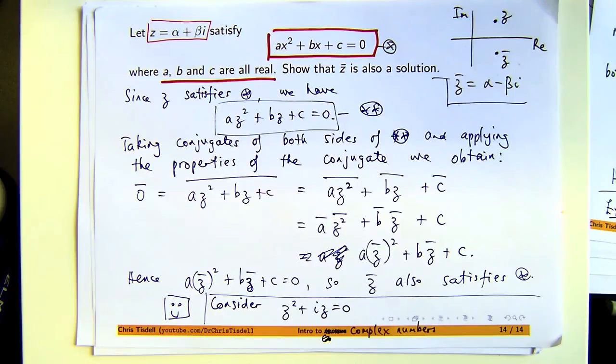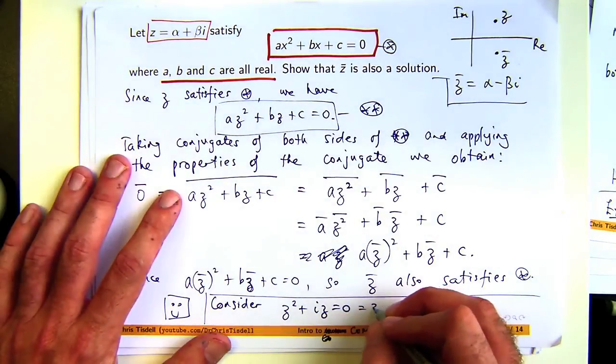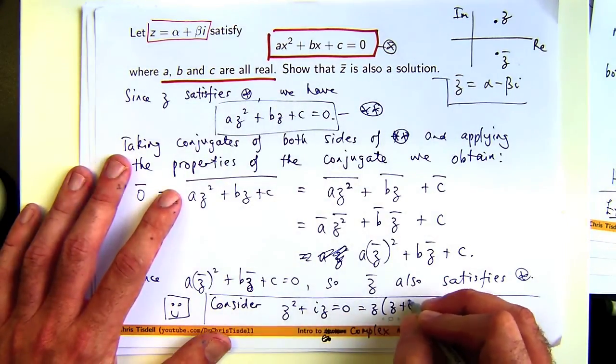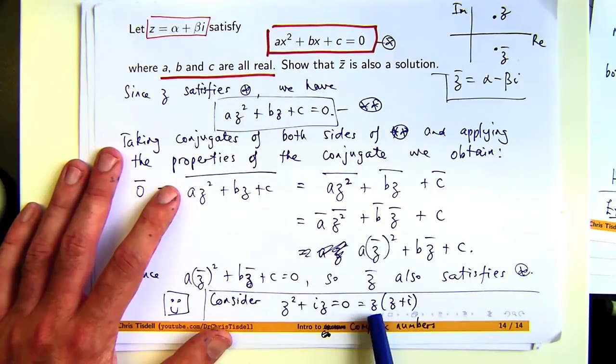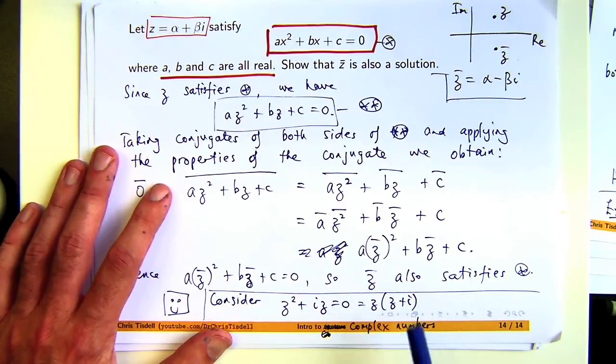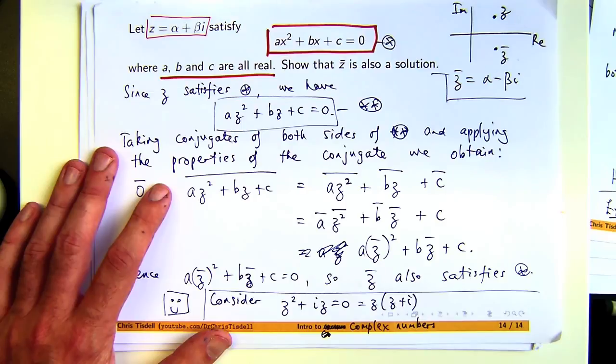Consider, I'm just going to choose a simple one, z squared plus iz equals zero. Here's a quadratic equation where the coefficient of z is complex. It's i. Now, I don't have to do anything special to that. I can factorize it. So what are my solutions going to be? Zero and negative i. Now, zero and negative i are not the conjugates of each other. Therefore,